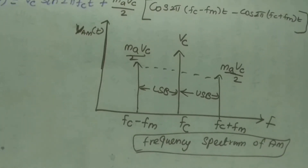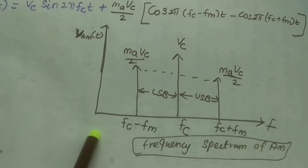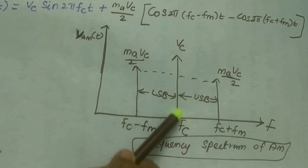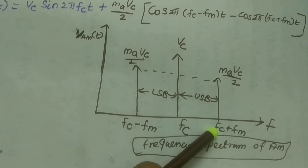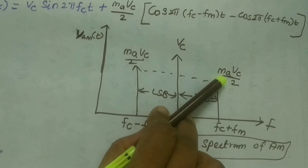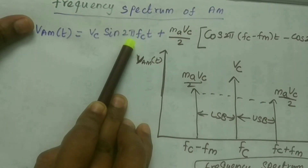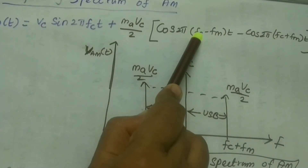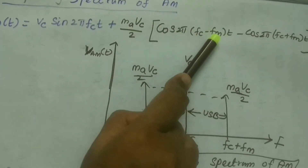Now we draw the frequency spectrum of the AM wave. The frequency spectrum is the AM wave representation in the frequency domain. We take frequency on the x-axis and amplitude on the y-axis. The carrier signal has amplitude Vc at frequency Fc. The upper sideband is at Fc plus Fm with amplitude MaVc/2. The lower sideband is at Fc minus Fm with amplitude MaVc/2.